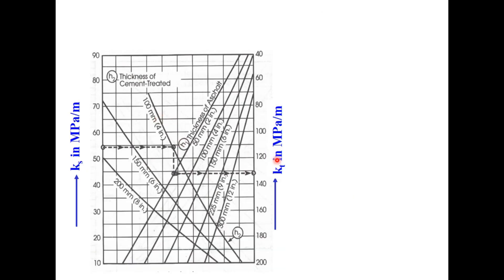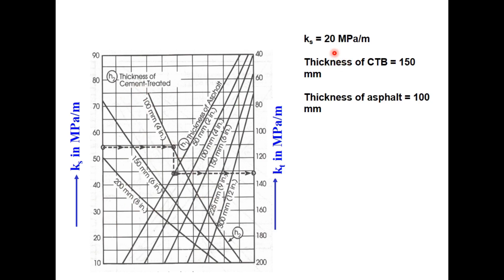A similar chart is used to determine the effective k-value when the base is cement-treated base (CTB). Using the same example with subgrade k-value of 20 MPa/m, CTB thickness of 150 mm, and asphalt layer thickness of 100 mm, you start at 20 MPa, go to the line for 150 mm CTB, then up to 100 mm asphalt layer, and read the k-value as 110 MPa per meter on the right side.